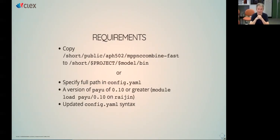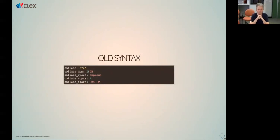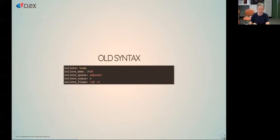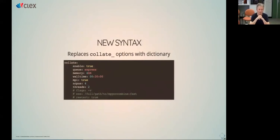The requirements to use mppnc_combine_fast: you need an mppnc_combine_fast executable - there's one in /short/public/aph502, though you should check permissions. You either copy that to where your model expects to find it, typically in /short/project/model_name/bin, or specify the full path in your config YAML. You'll also need the latest version of PiU on Raijin, which is 0.10 - module load payu/0.10.